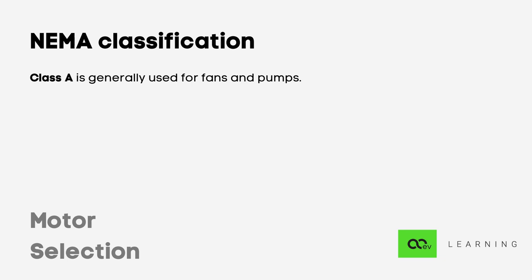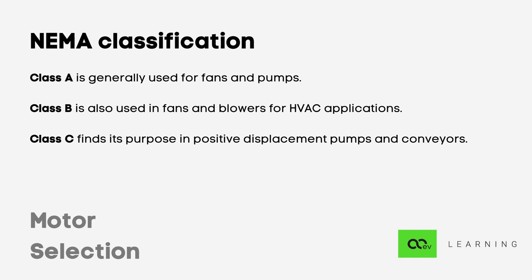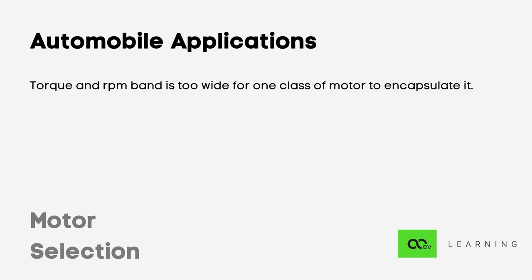Class A is generally used for fans and pumps. Class B is also used in fans and blowers for aspect applications. Class C finds its purpose in positive displacement pumps and conveyors. Cranes and hoists have Class D motors. Now all these are on one scale of the balance, and the traction application electric vehicle motors are on the other. Traction application is a beast by itself — its torque and RPM band is too wide for one class of motor to encapsulate it.